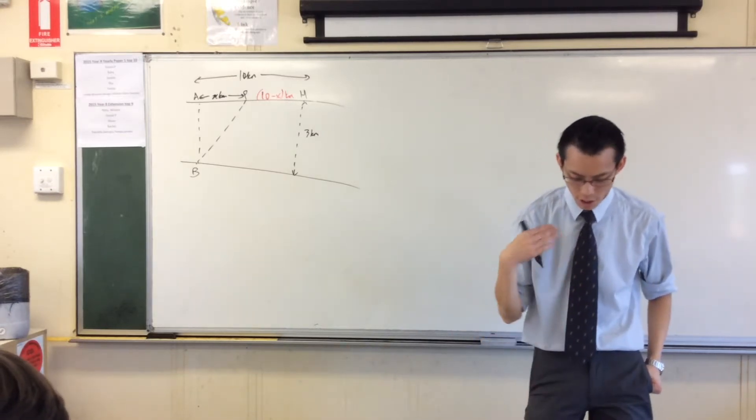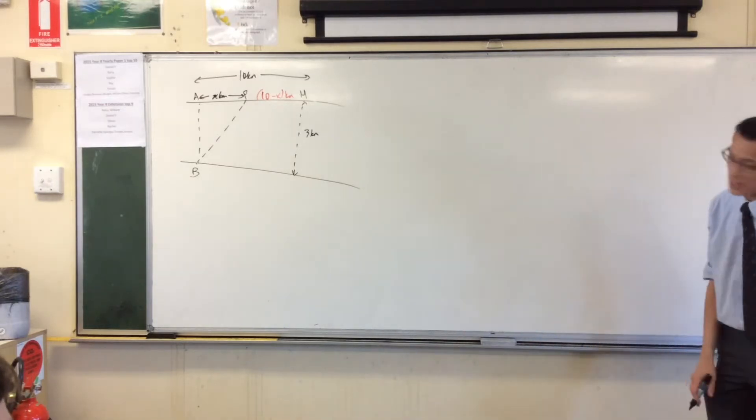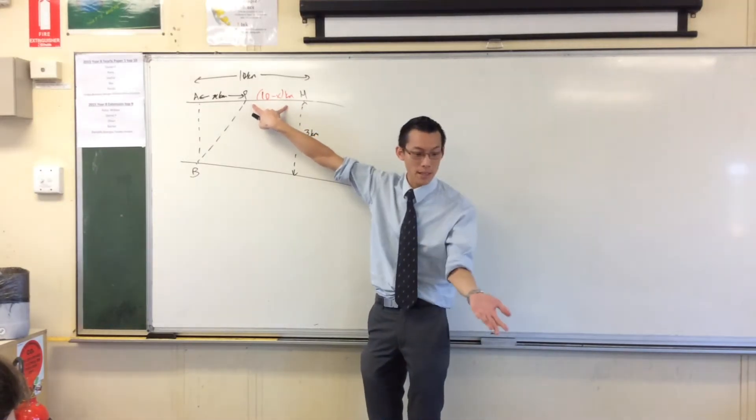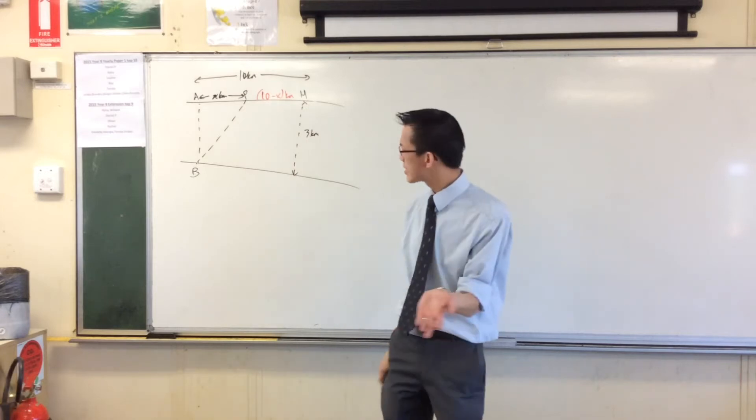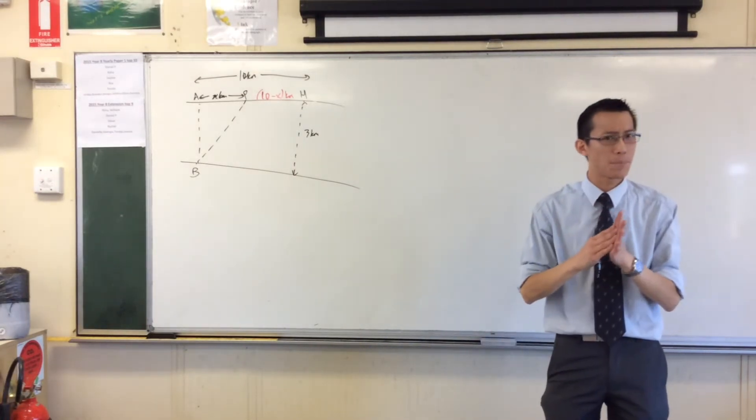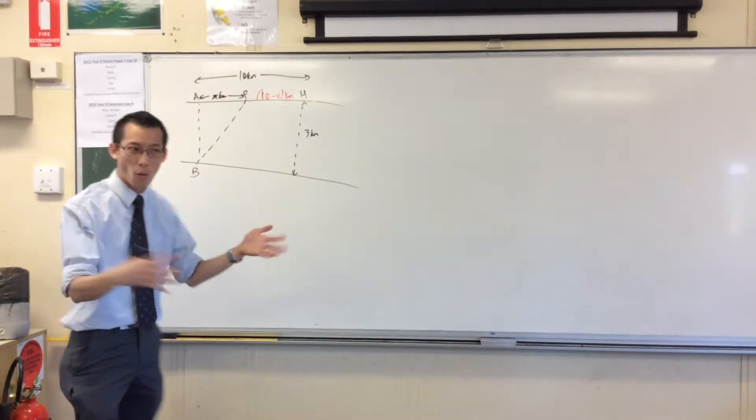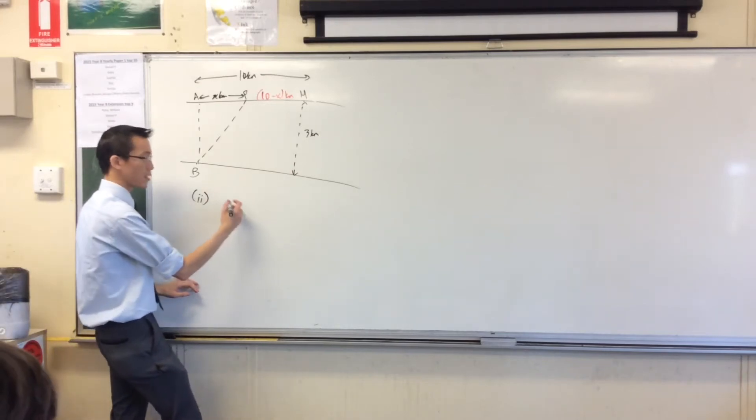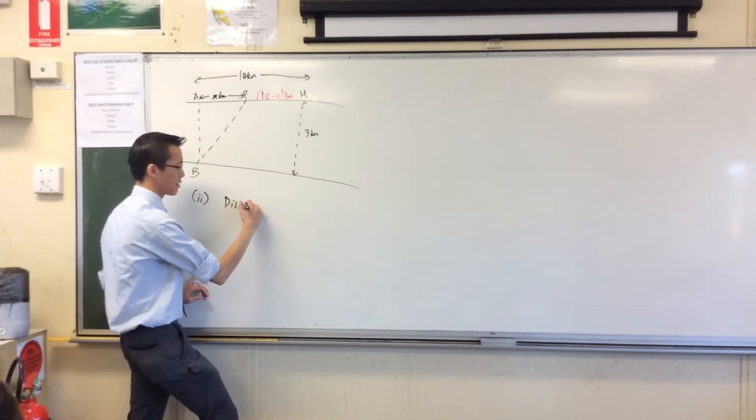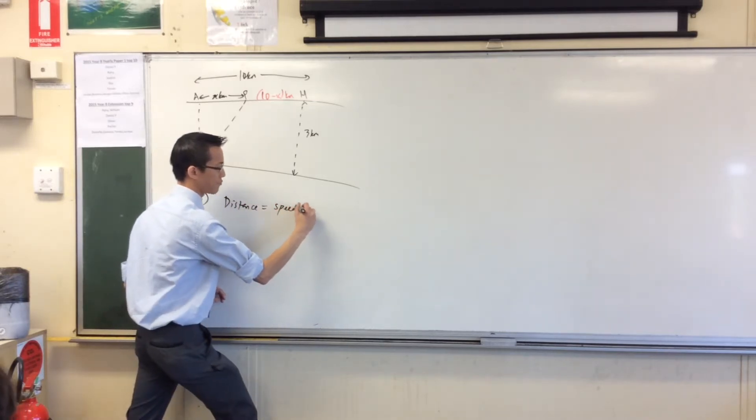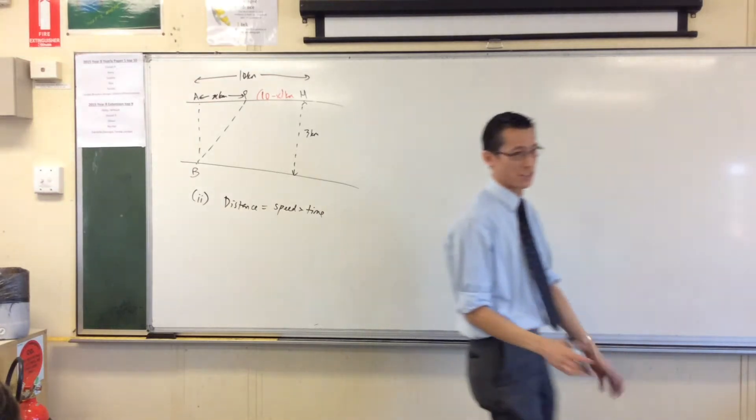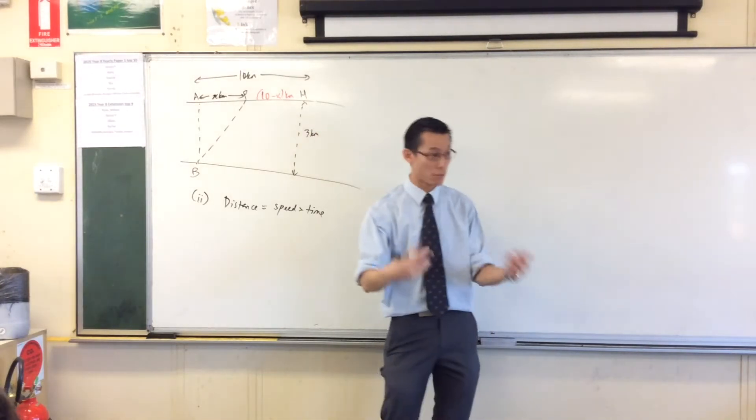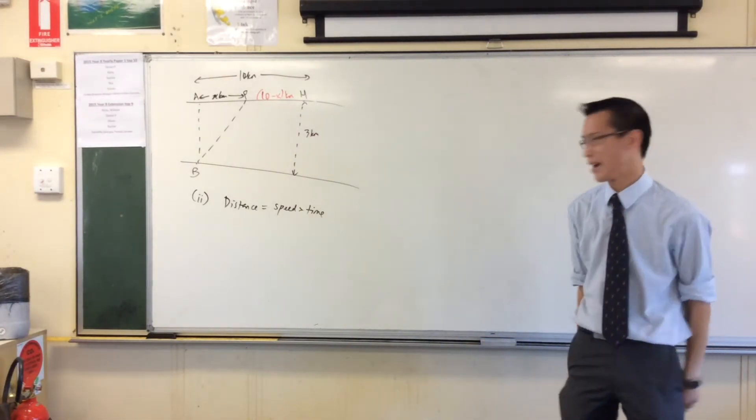Part two, show the total time, T hours, taken by Jerry to reach his destination. You can see the 10 minus X that we just determined. It appears in the result we're about to try and prove. It's divided by 5. Why is it divided by 5? That's speed. So at some point, because this is a show question, I would expect you to say something like, what am I after? Distance is speed times time. You need to show that relationship somehow, because otherwise, your 10 minus X on 5, it just literally appears from thin air. But you must show this.